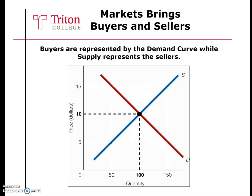Here we have an example — let's assume this is a graph of a toy market. The upward sloping blue line represents sellers; we call this the supply curve. As price increases, quantity supplied also increases due to the law of supply. The downward sloping blue line is called the demand curve, which represents buyers. As price decreases, quantity demanded increases due to the law of demand.